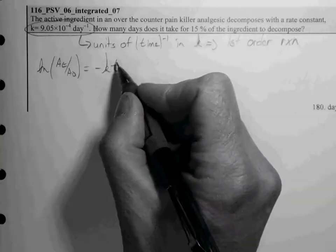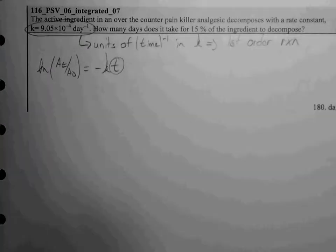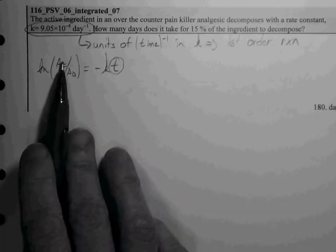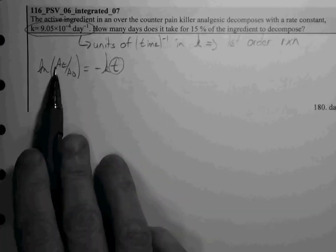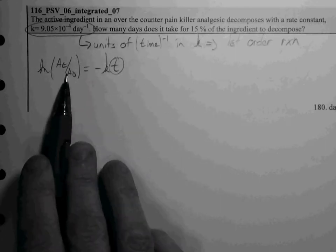So we're going to be solving for time. And we know K, given it, we want to find a way to reduce down AT to A0.